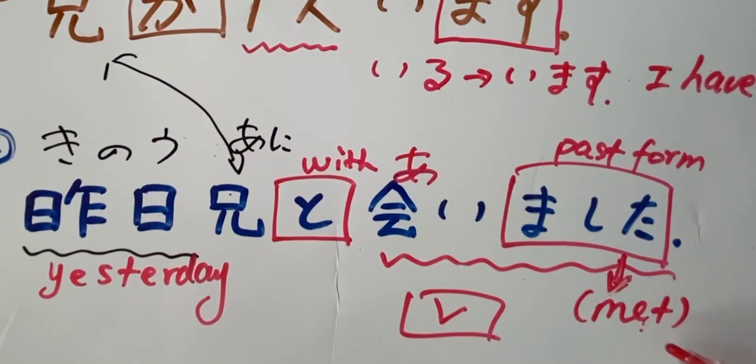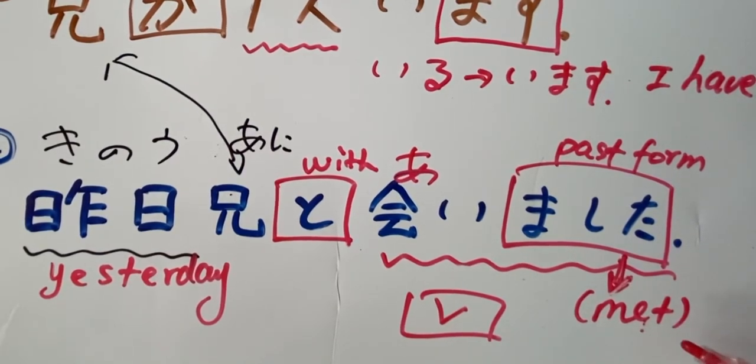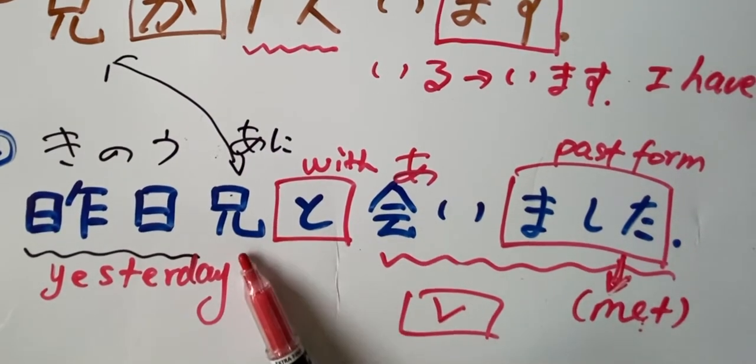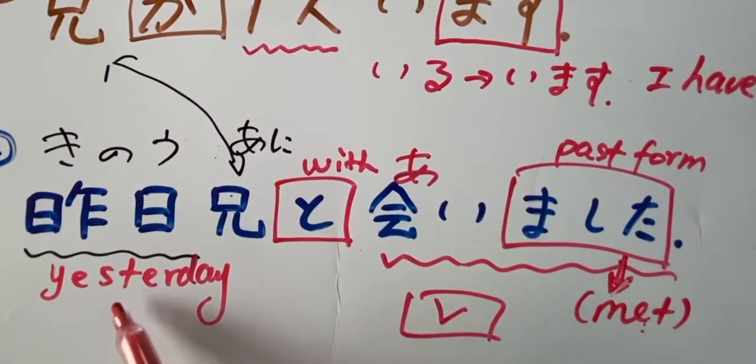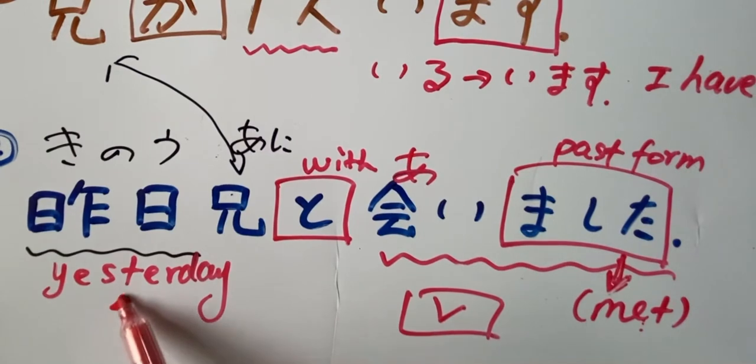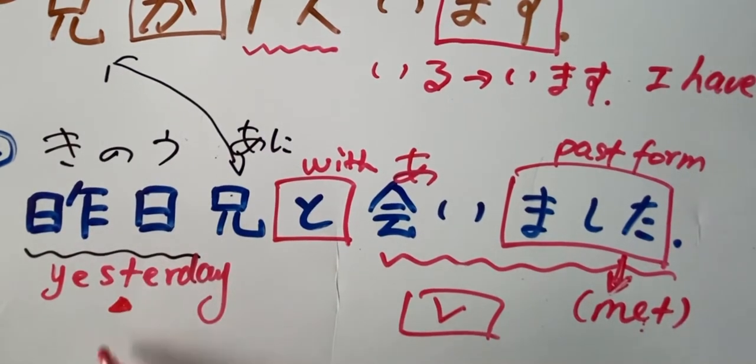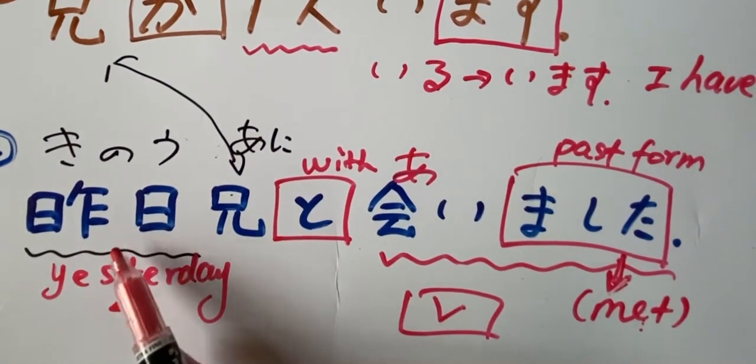Yesterday. Aimashita. Ne. I met with my brother yesterday. Normally the time frame, the time, is in front. Kino. Kino, yesterday. Okay. Yesterday.